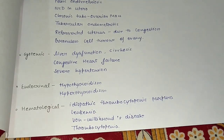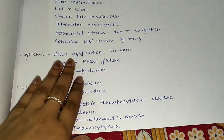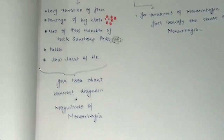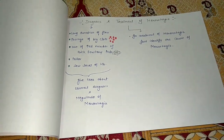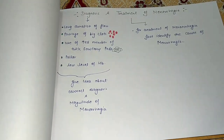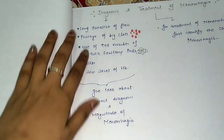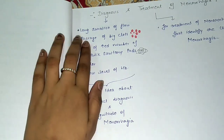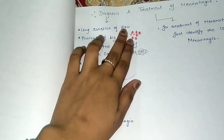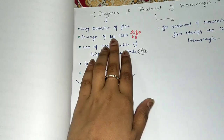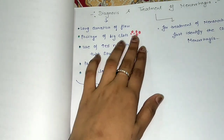These are all the organic causes of menorrhagia. Now let's discuss the diagnosis. Diagnosis of menorrhagia includes a long duration of flow, passage of large clots, which the patient can see.